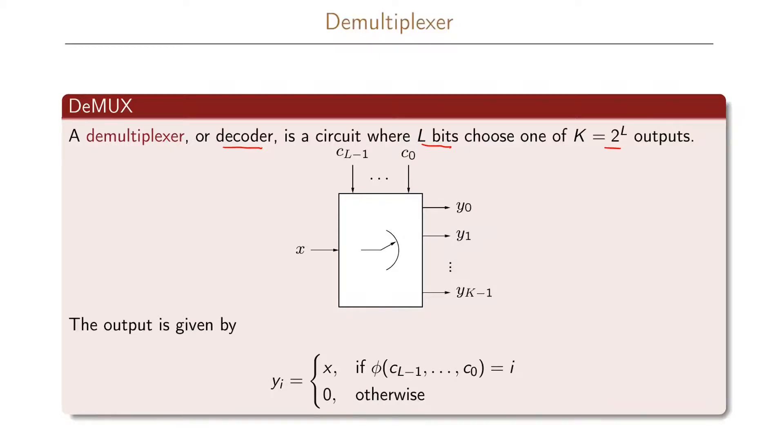Instead of choosing one of 2 to the L inputs as in the multiplexer case, we are now having one input and choosing this to be directed to one of 2 to the L outputs. The single input here is x, and we have k, which is 2 to the L different outputs. Our control bits here will say which of the outputs our input will direct to. The outputs are given as yi is x if the phi function of our input vector c0 to cL-1 is exactly this index i, and all the other outputs are 0.